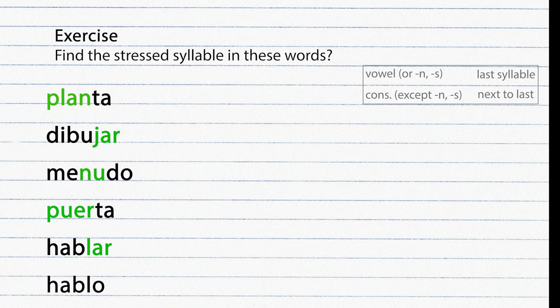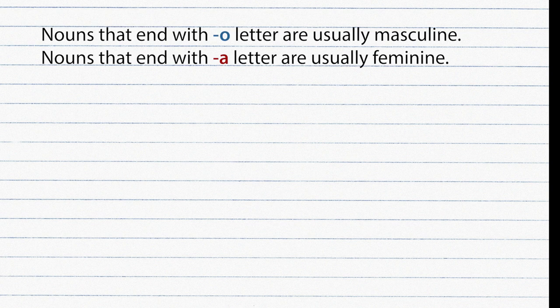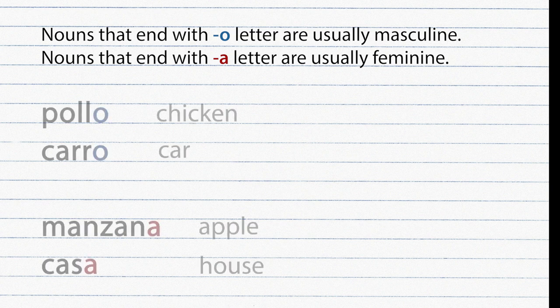In Spanish every noun is either masculine or feminine. Nouns that end with the letter O are usually masculine and nouns that end with the letter A are usually feminine. For example: Pollo, Carro — masculine; Manzana, Casa — feminine.